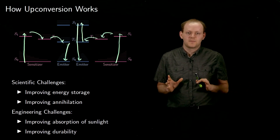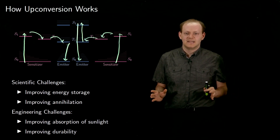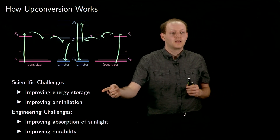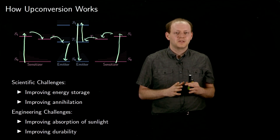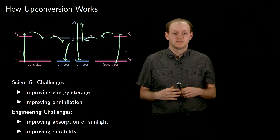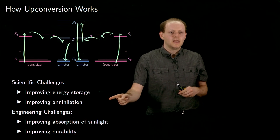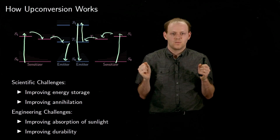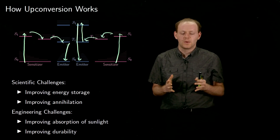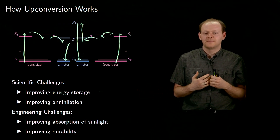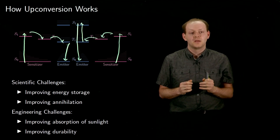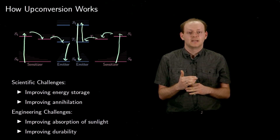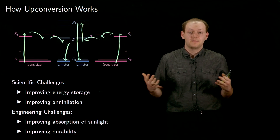There are some challenges for making upconversion a useful technique. There are two scientific challenges. The first is improving energy storage — we want triplet excited states to store energy and not get lost. The second is improving annihilation. When two triplet excited states get close together, we want them to destroy each other, so we want to increase the rate of annihilation. When the annihilation occurs, we want to ensure that it results in a singlet excited state and not some other state that might be present in the molecule.